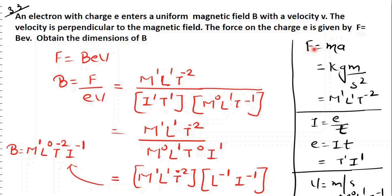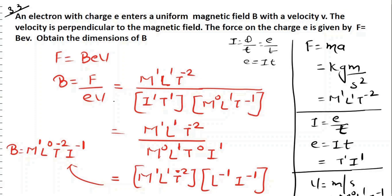To calculate the dimension of B, we rearrange to get B equal to F upon EV. Now we write the dimension of each one by one. Force equals mass into acceleration, mass unit is kg, acceleration is meter per second square. So the dimension formula is M1 L1 T minus 2. For charge on electron, using I equal to Q by T, we get E equal to I multiplied by T, so dimension is I1 T1. For velocity, it is meter per second, so dimension is M0 L1 T minus 1.